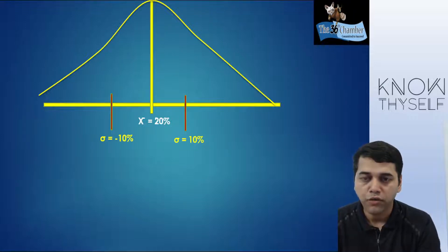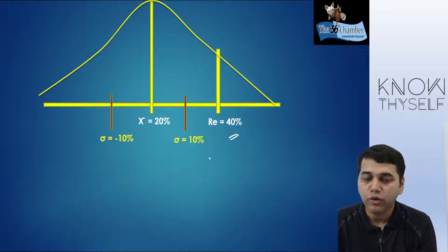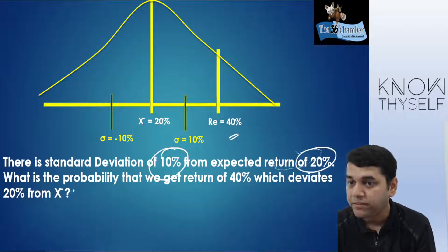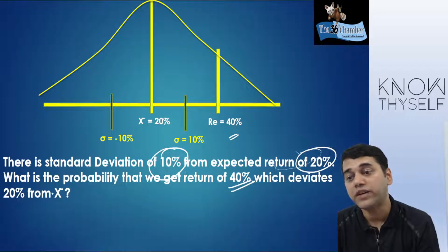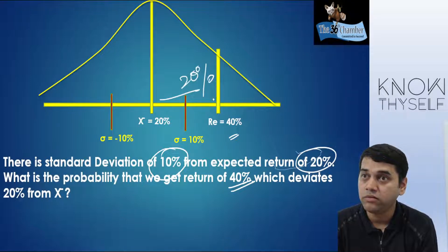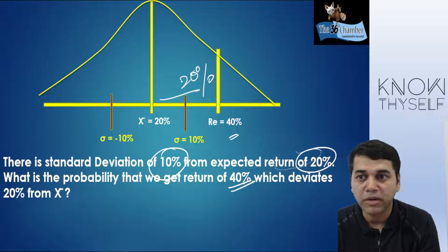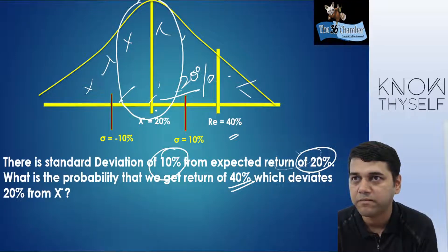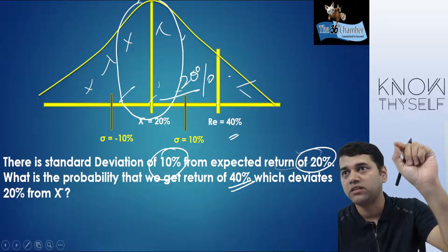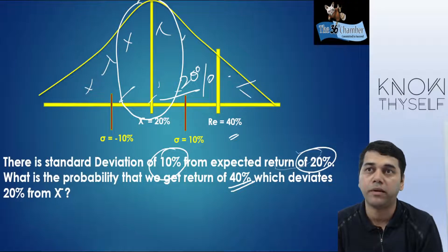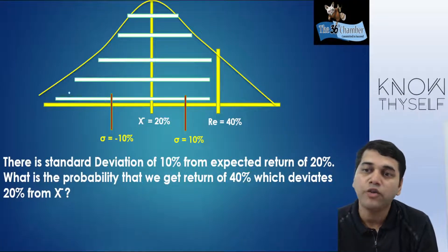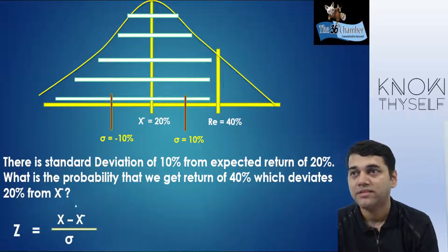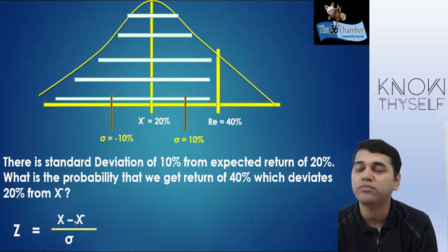There is a range of Z values from the standard normal distribution table. You wanted 40% return. You are looking at what is the probability of 40% return for a given risk. There is a standard deviation of 10% from the expected return of 20%. What is the probability that we get 40%, which deviates 20% from the X-bar? That means there is a deviation of 20%. You always find out the cumulative value from the Z-table.